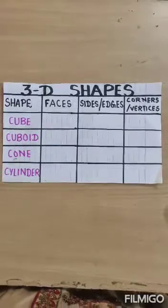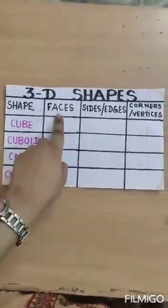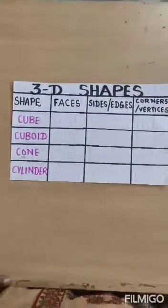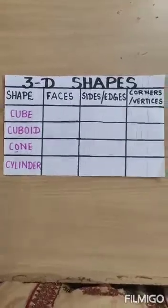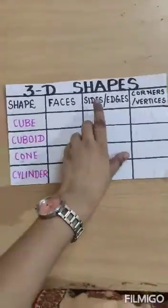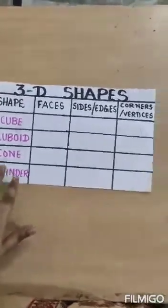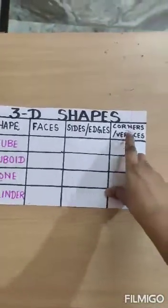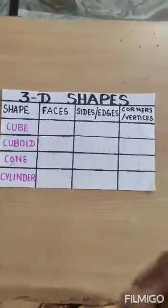Here are some properties related to our 3D shapes. Faces means its surface — how many number of faces do these 3D shapes have. Then we will talk about how many edges it has, and at last we will discuss how many corners or vertices the 3D shapes have.